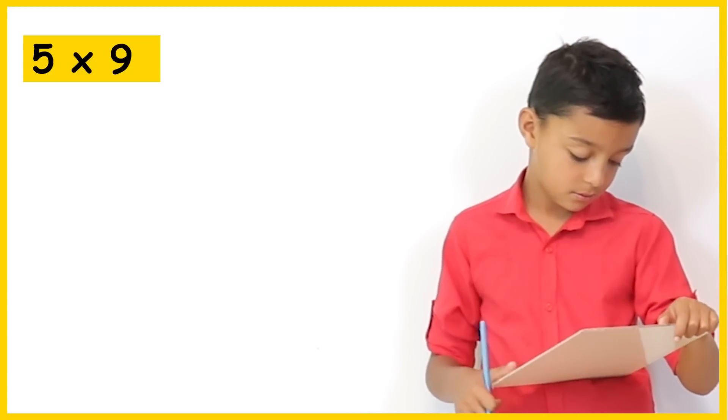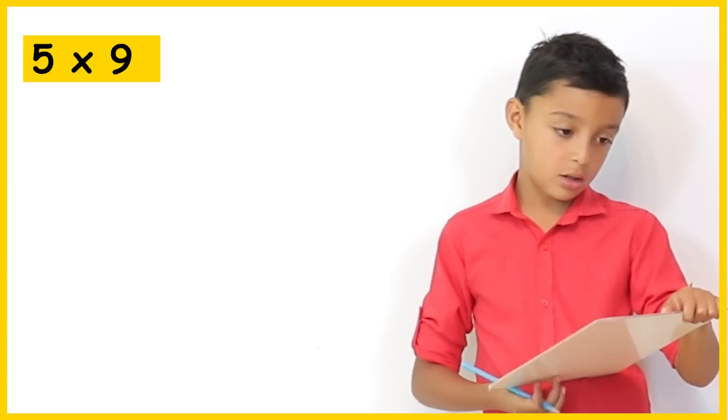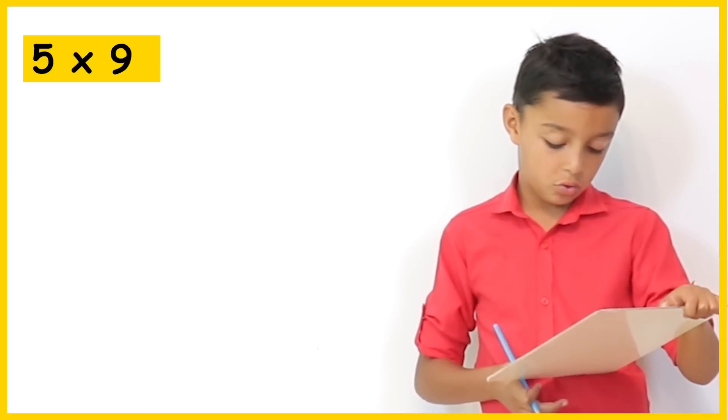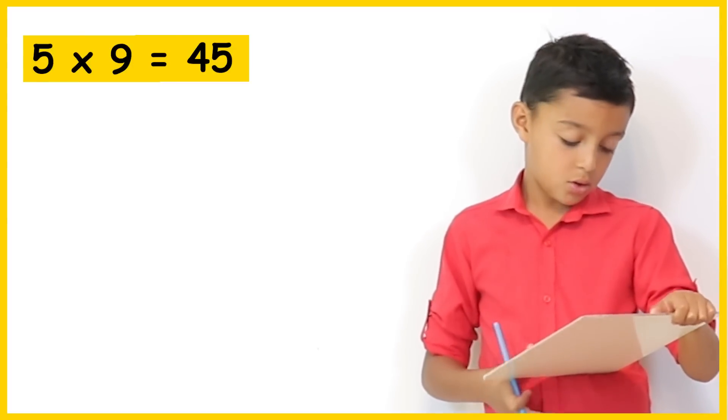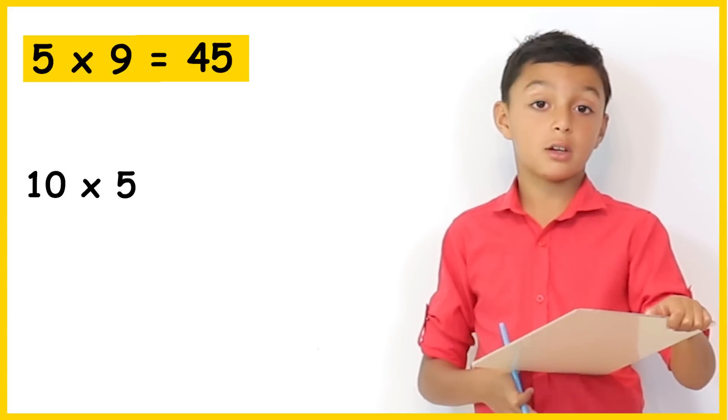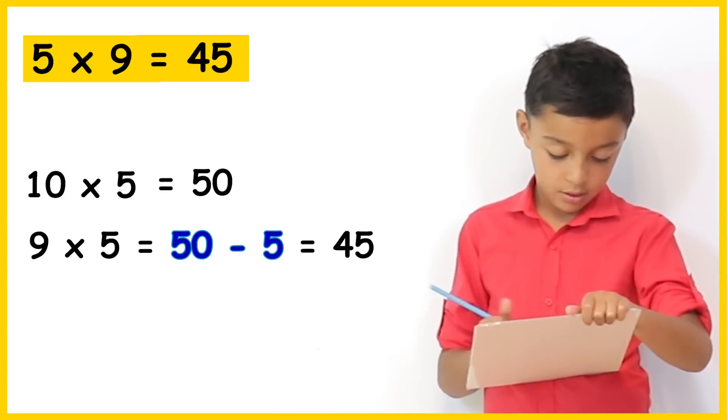What about 5 times 9? 5 times 9 is 45. How did you work it out? Well, 10 times 5 is 50 take away 5 is 45. Brilliant. Alright. Next question.